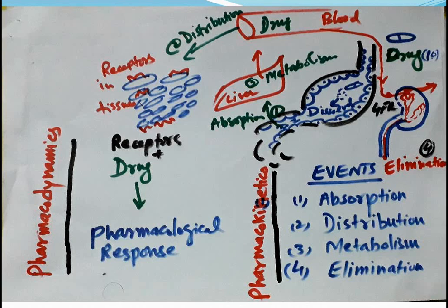Before going into details, you need to know the concept of absorption, distribution, metabolism, and elimination of drugs — general pharmacology. Once a patient takes a drug by the oral route, it is absorbed mainly in the upper portion of the small intestine, passes through the liver, reaches the blood and general circulation, is then distributed to tissues. Tissues have receptors, forming a drug-receptor complex giving a pharmacological response — this is pharmacodynamics.